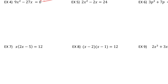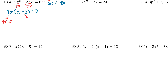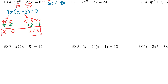Example 4: again, the first thing we want to do is take out a GCF. In this case our GCF is 9x. Dividing both terms by 9x, the GCF comes out front and we get 9x times x minus 3. There are no more x squareds, so this is already fully factored. We set each factor equal to 0: 9x equals 0, giving x equals 0 after dividing both sides by 9; and x minus 3 equals 0, giving x equals positive 3 after adding 3 to both sides.